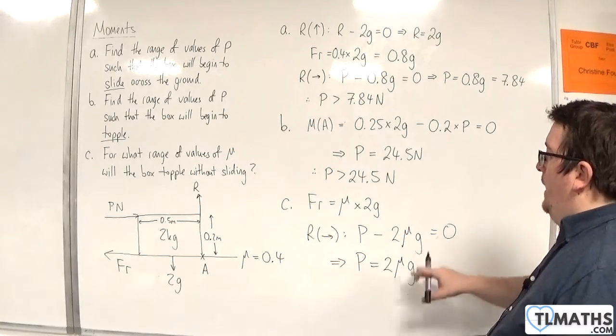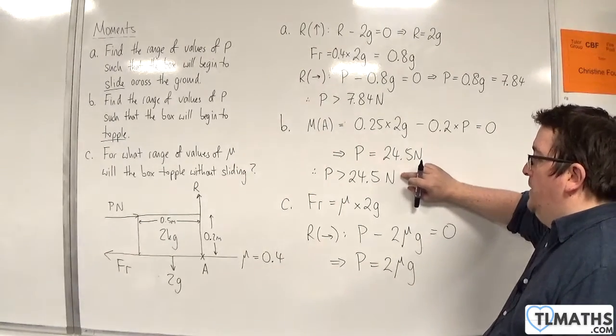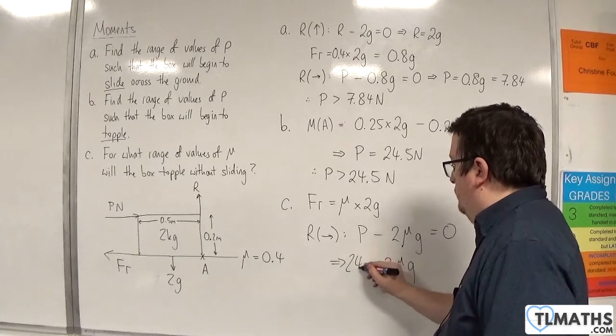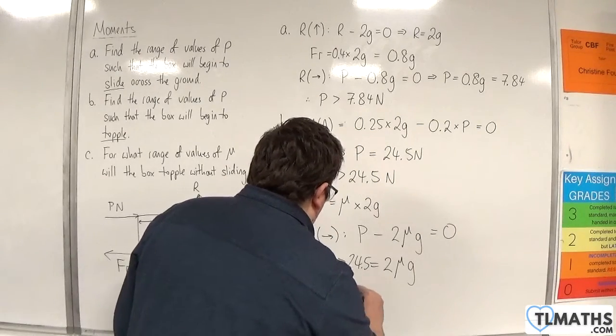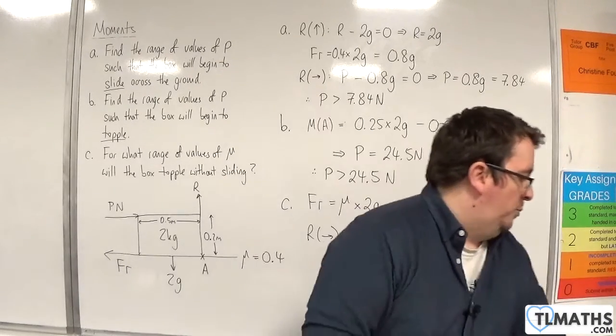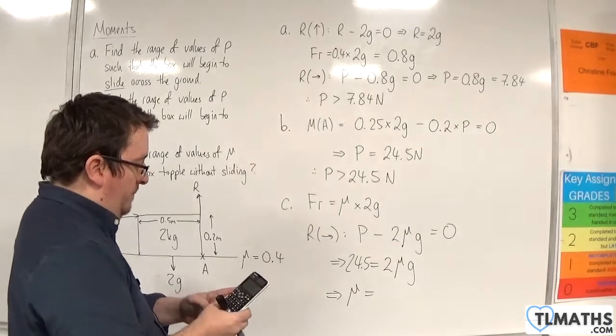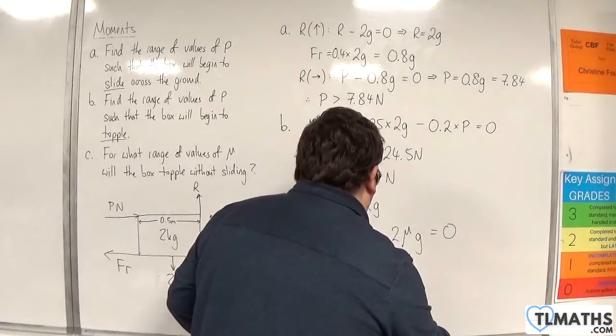Now, p here, remember, because we need it to start toppling, needs to be 24.5. So mu is going to be 24.5 divided by 2 times g, which is 1.25.